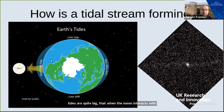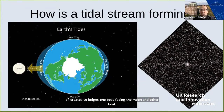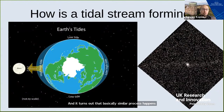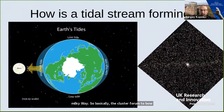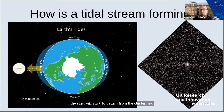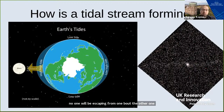You probably know, especially if you are from Edinburgh because the tides are quite big here, that when the Moon interacts with the Earth, it creates two bulges — one bulge facing the Moon and another on the opposite side. A similar process happens when you have a cluster orbiting a big galaxy like our own Milky Way. The cluster forms two bulges, and if the tidal field from the Milky Way is strong enough, stars will start to detach from the cluster and escape, forming the tail — one leading tail and one trailing tail.